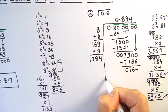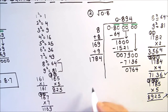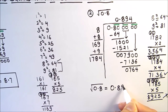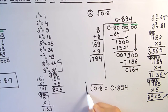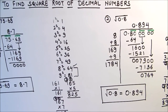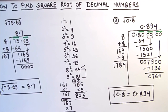We now have our quotient up to three decimal places, so we stop here. The square root of 0.8 is approximately 0.894. This is how, using the long division method, you can find the square root of any decimal number easily. I hope this video is helpful. If you like the video, please hit the like button and subscribe to my channel for more math videos. Thanks for watching.